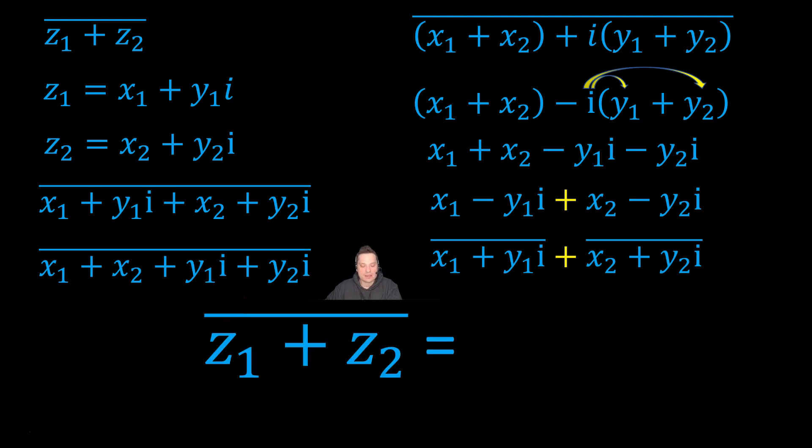So what does all of this allow us to conclude? It's telling us that z sub 1 plus z sub 2 and the complex conjugate of the sum is equivalent to the conjugate of z sub 1 plus the conjugate of z sub 2. And that yellow plus is just getting carried straight down. What it's telling you is when you're conjugating a sum, it's the same as just conjugating the individual complex numbers and then adding them back together. So you can distribute that conjugation operator to each member of the sum individually.